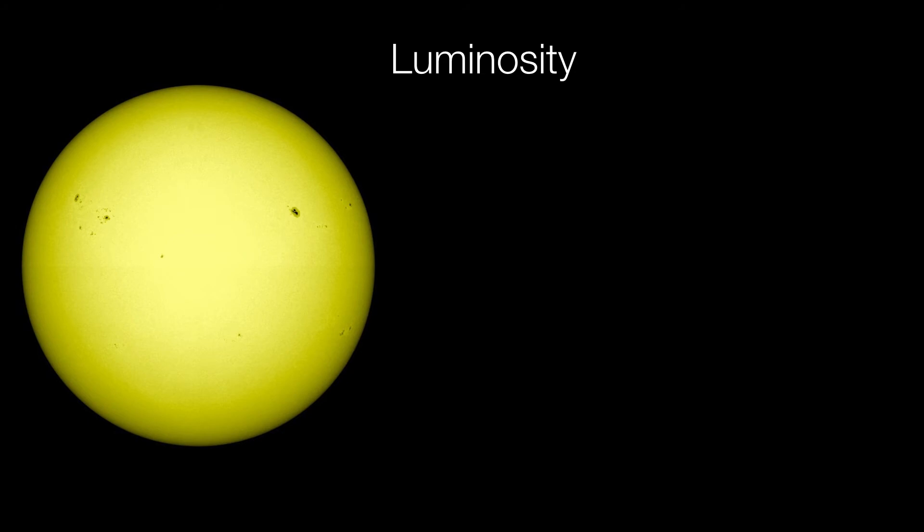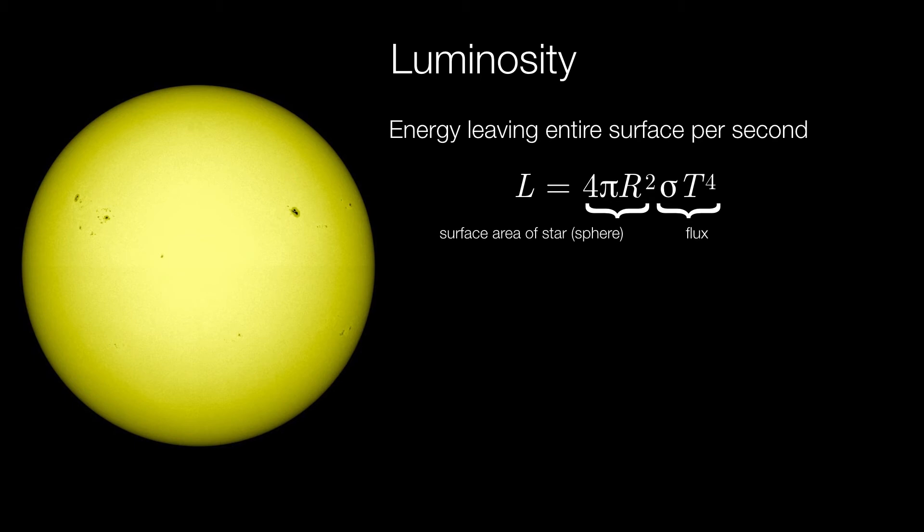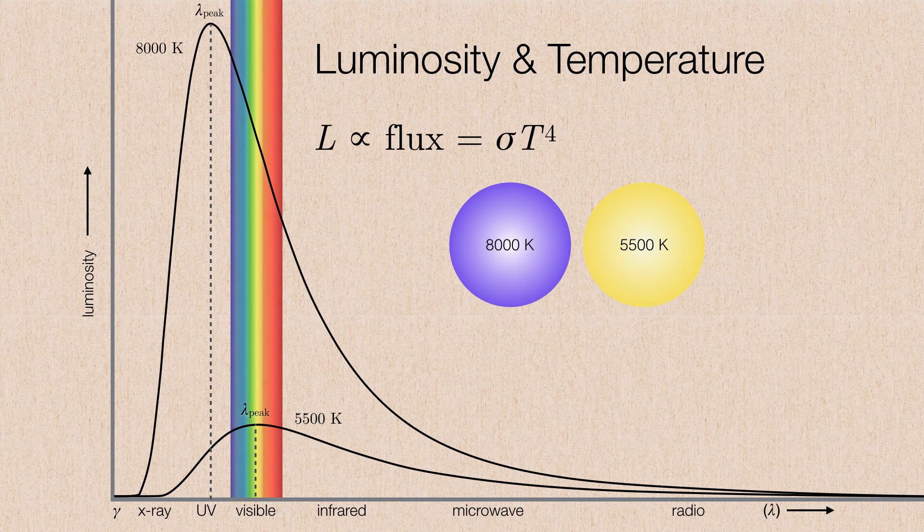What about the flux coming out of the entire surface area of the star? That's just something called the luminosity. It's just the energy leaving the entire surface every second. I like to think of this as the star equation because it tells us so much about the star. The luminosity of the star is the surface area of the star, which is a sphere. A sphere's surface area is 4π its radius squared multiplied by the flux, in this case, sigma times the surface temperature of the star raised to the fourth power. So this results in a number that we commonly measure in watts. To say this in English, the hotter or larger the star is, the more luminous it is.